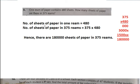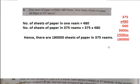Now students, number of sheets of paper in one rim is 480. Number of sheets of paper in 375 rims is equal to 375 into 480. You can also interchange the numbers in multiplication — whether you write 375 into 480 or 480 into 375, both answers will be the same. Do the multiplication on the side and write the answer. Hence there are 180,000 sheets of paper in 375 rims.